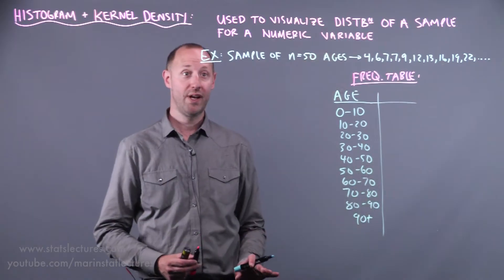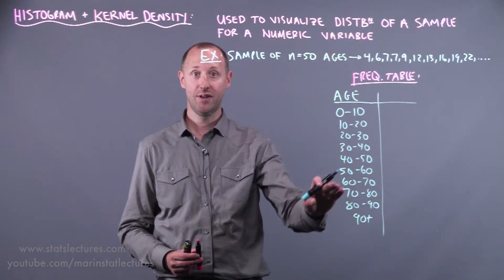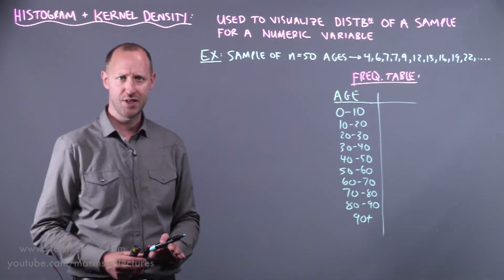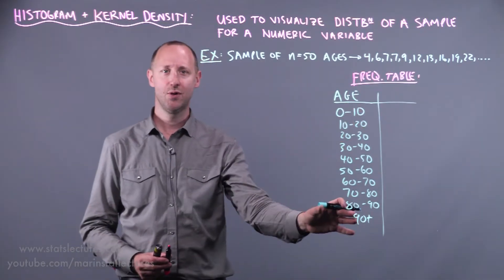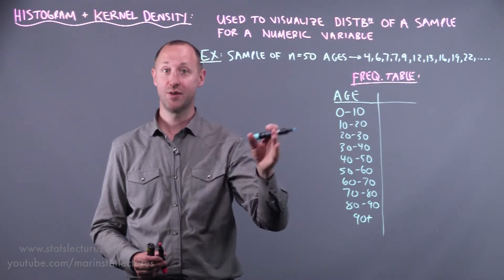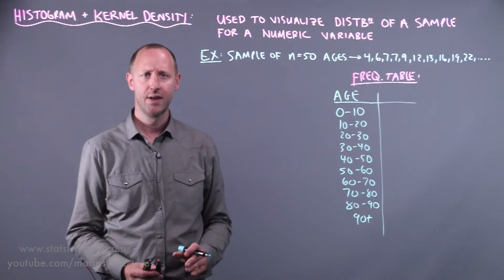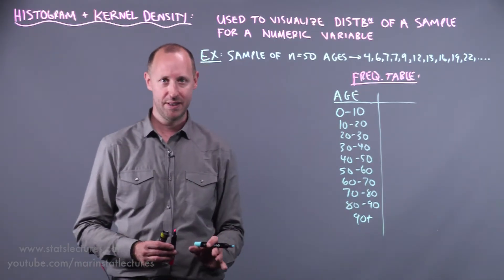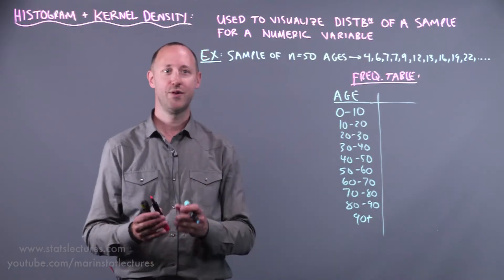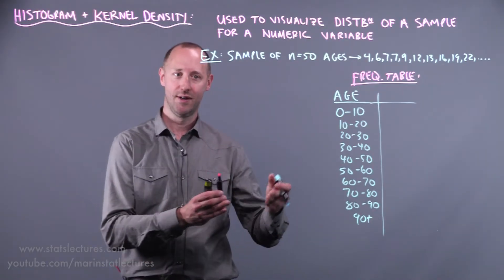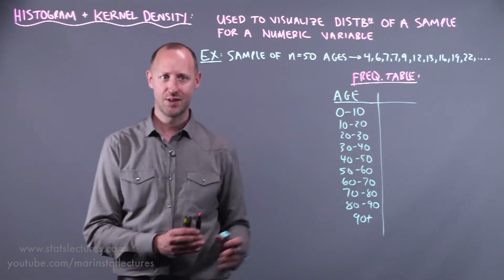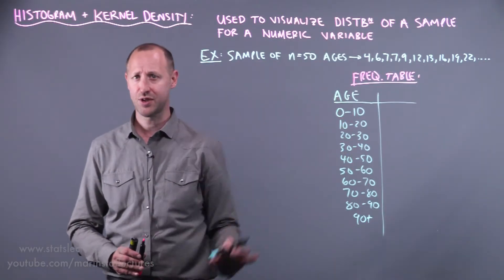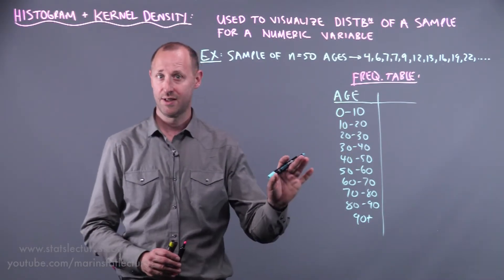Then what we're going to do next is count how many people fall into each of these. So I guess one thing worth mentioning before we get into that. I've chosen these bins or categories to be 0 to 10, 10 to 20 and so on. You or a computer might choose slightly different bins. So they might choose 0 to 15, 15 to 30, 30 to 45 and so on. So this is just a choice I've made here for the sake of discussion at the moment.